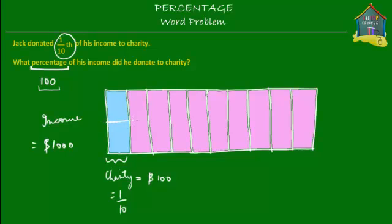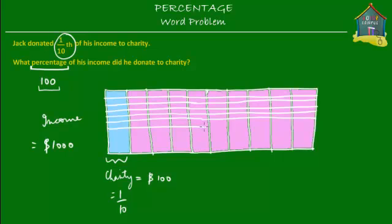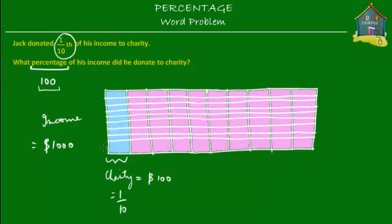So far we've divided the income block into ten parts. Now let's take the same block and divide it into 100 parts. To do that, I make 10 lines across, which divides the entire block into 100 parts. We're making 50 parts at the top and 50 parts at the bottom, giving a total of 100 equal parts.